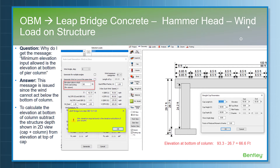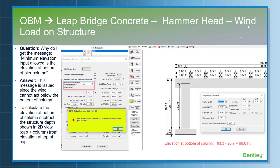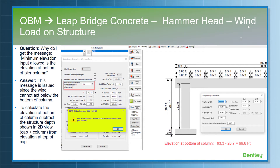Regarding wind load elevation: when the user applies wind load, the message states that the minimum elevation input allowed is the elevation at the bottom of the pier column. This message is issued when the wind load cannot be applied or cannot act below the bottom of the column. To calculate the correct elevation at the bottom of the column, the user has to subtract the structural depth — the combination of column and pier cap — from the top elevation of the pier cap. For example, 93.3 minus 26.7 equals 66.6 feet. That value needs to be entered in the auto load generation wind-on-structure dialog box, and the warning will go away.